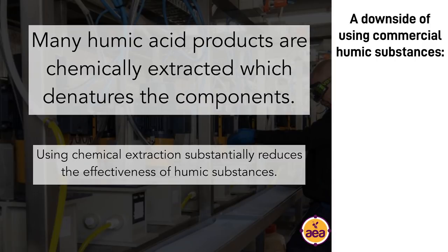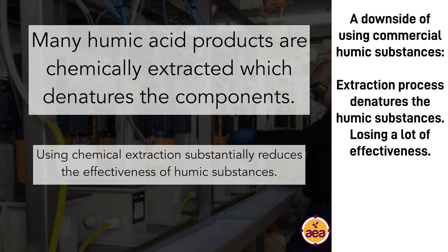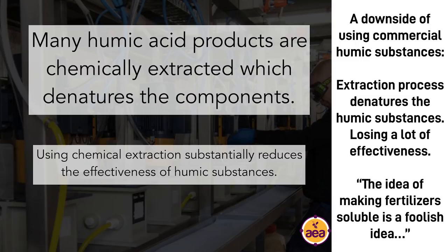The challenge — and in my opinion this is a substantial downside of using commercial humic substances, humic acids, and fulvic acids — is that the potassium hydroxide extraction process substantially denatures the humic substances in the product and we lose a lot of the potential effectiveness. We gain some ease of use because now it's a true liquid and truly water-soluble. That reminds me of a quote from William Albrecht: his comment was that the idea of making fertilizers soluble is a foolish idea, and that fertilizers and nutrients should be available but not soluble. This is exactly what humic substances can deliver — when we combine humic substances with nitrogen and phosphorus fertilizers, they can make nutrients available but not soluble.